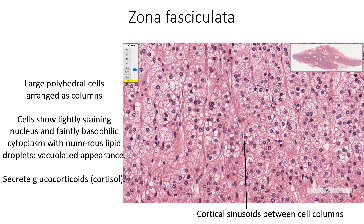Zona fasciculata shows large polyhedral cells arranged as longitudinal columns along the layer. These cells show lightly staining round nuclei; some may be binucleate. The cytoplasm is faintly basophilic containing smooth endoplasmic reticulum, mitochondria, rough endoplasmic reticulum, ribosomes, and numerous lipid droplets, giving a characteristic vacuolated appearance. These cells secrete glucocorticoids, mainly cortisol, under the influence of adrenocorticotrophic hormone from the anterior pituitary. Between the columns, we find cortical sinusoids lined by fenestrated endothelium.